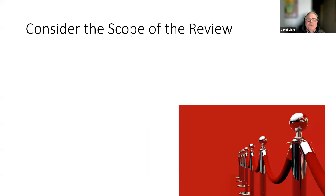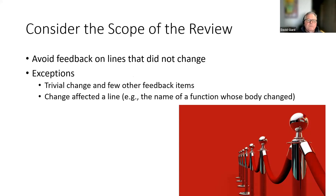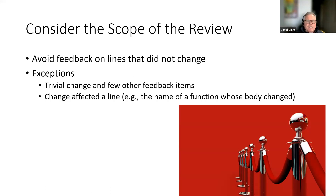Consider the scope of the code review. Resist the temptation to review more than the change set. As much as possible, stick to the change list and avoid feedback on lines that did not change. Exceptions include truly trivial things like a nearby spelling error, or if changed code actually affected something else — like a function whose name should change because its behavior changed. But in general, it's tempting to spelunk through the code finding other problems, and that expands the scope, protracts the review length, and is generally not a good idea.